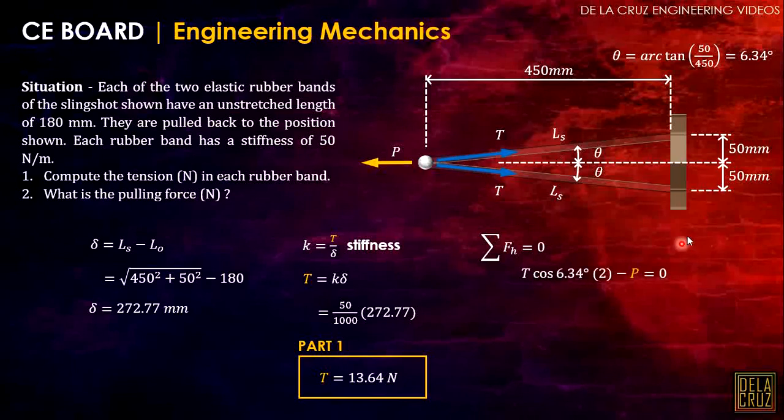That will be T, the horizontal component of T is cosine 6.34 degrees. Take note, there are two, so multiply by 2, then minus P. We have P here: 13.64 cosine. Bring down this equation, and we have the answer: P equals 27.11 newtons.